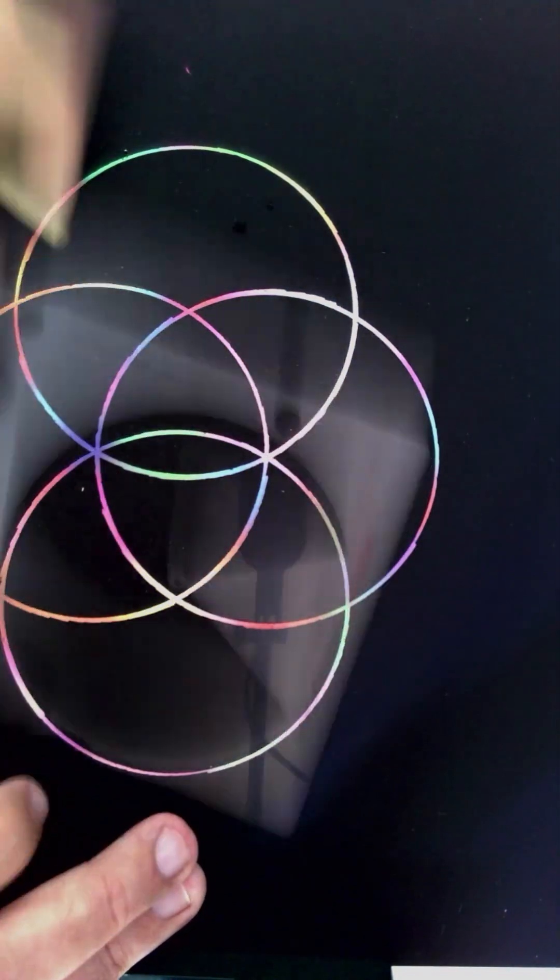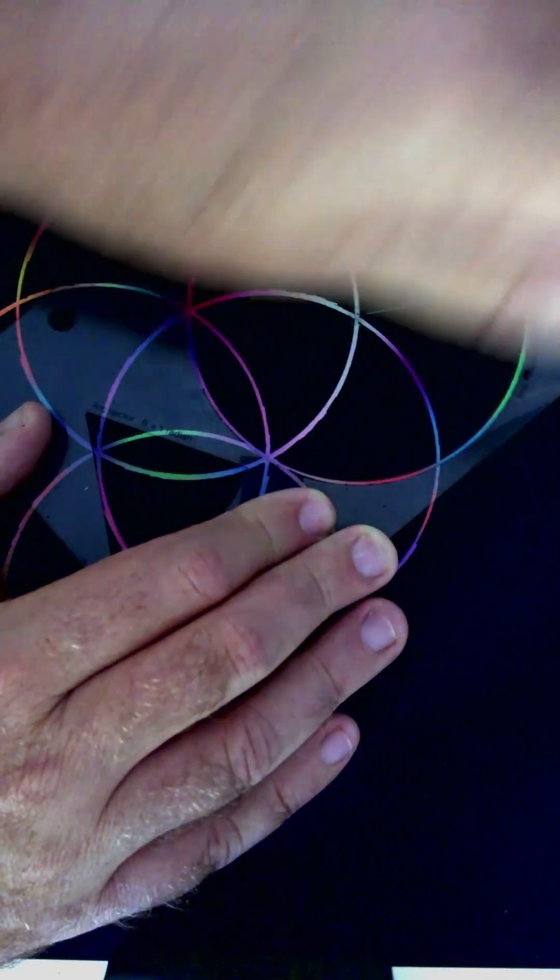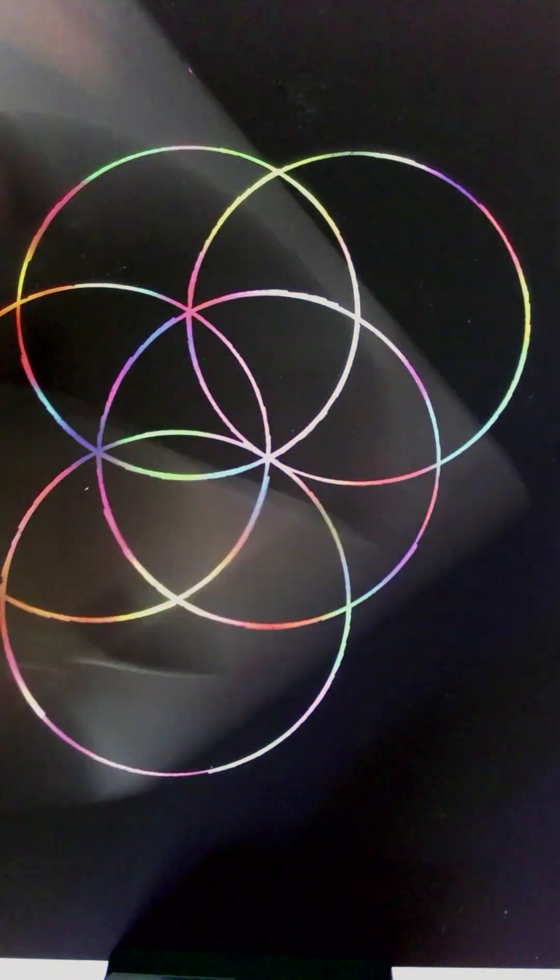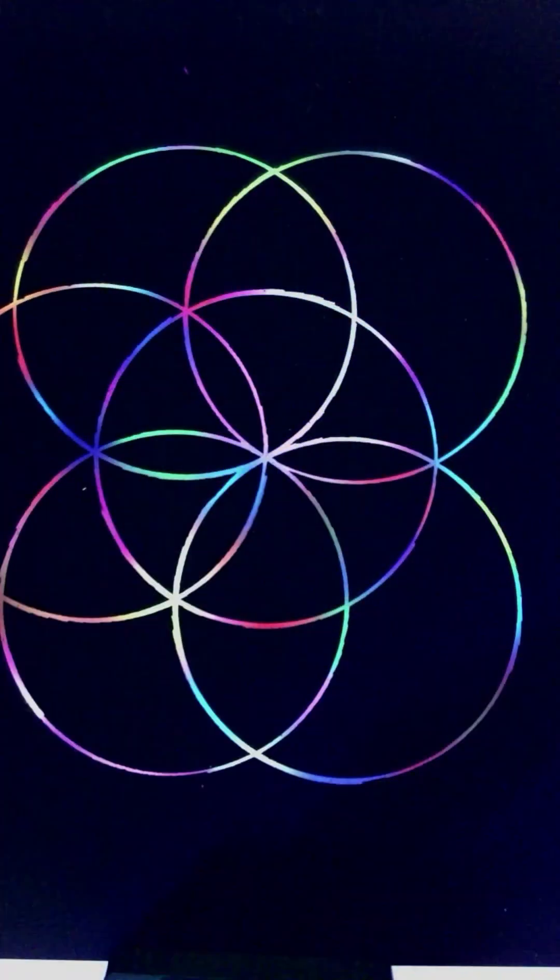Now, without changing the radius, begin marking points around the circle. Rotate the compass and step off the distance evenly, creating 12 equal divisions. Think of the circle like a clock face. Each mark represents one hour. Accuracy here will make the mandala feel balanced and calm.